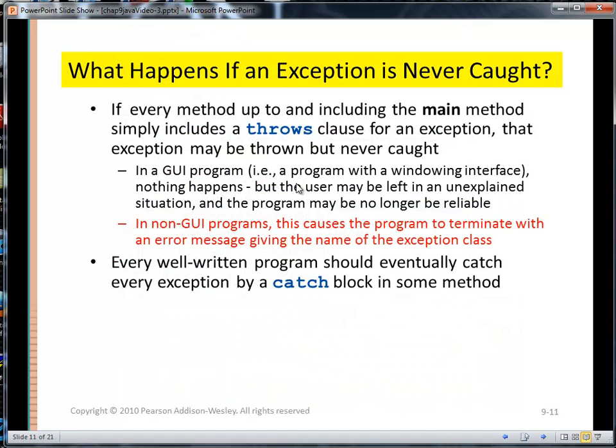So what happens if an exception is never caught? If every method, up to and including the main method, simply includes a throws clause, that exception may be thrown but never caught. In a non-GUI program, this causes the program to terminate with an error message giving the name of the exception class. But in a GUI program, nothing happens, but the user may be left in an unexplained situation, and the program may be no longer be reliable. In non-GUI programs, this causes the program to terminate with an error message giving the name of the exception class. Every well-written program should eventually catch every exception by a catch block in some method.